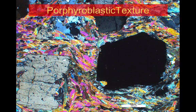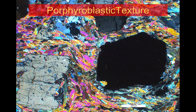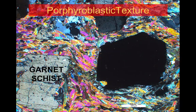We can see porphyroblastic texture in a foliated rock as well. This is a schist, but within the schist there are new minerals that have grown — in particular the very distinctive dark mineral, which is garnet. So that garnet crystal has grown within the schist. We can tell then that this schist has been heated to higher temperatures perhaps than the one we saw earlier in this video.